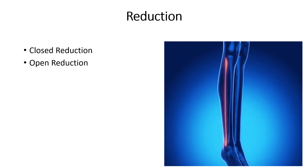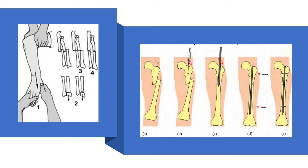Reduction کی دو types ہوتی ہیں: closed reduction اور open reduction۔ Closed reduction ایک ایسا procedure ہے جو broken bones کے لیے use کیا جاتا ہے — اس میں skin کو cut کرنے کی ضرورت نہیں پڑتی۔ Physician اپنے ہاتھوں سے ہی bones کو realign کر دیتا ہے، جیسا کہ picture A میں نظر آ رہا ہے، اور broken bones کو ان کی place پر put back کر دیا جاتا ہے۔